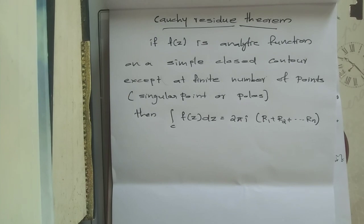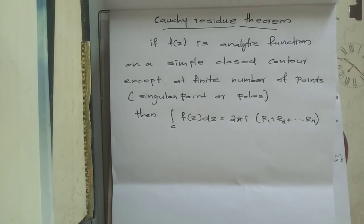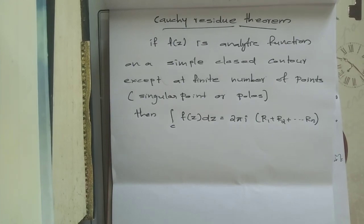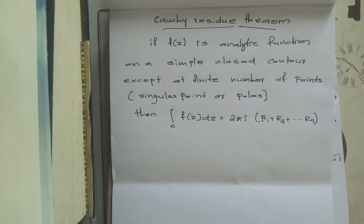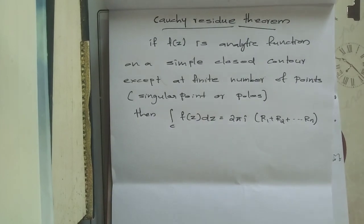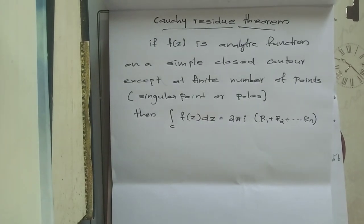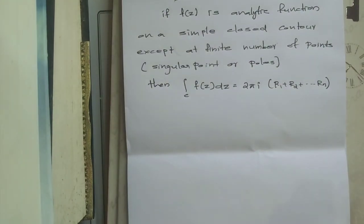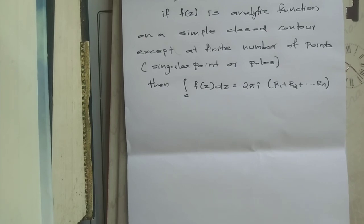A pole or singular point is the complex point where the function becomes infinite or is not defined. Before solving examples, we will look at how to find the residues of some kinds of poles — specifically the simple pole, the pole of order n, and the pole at infinity.